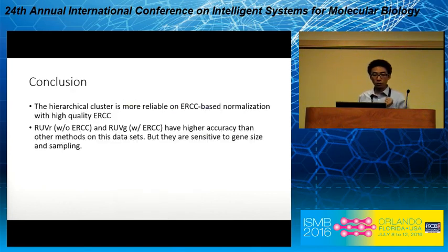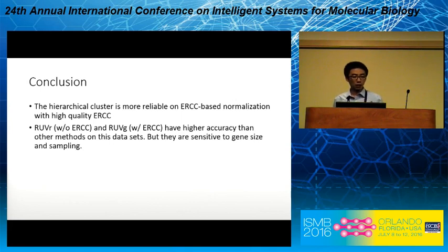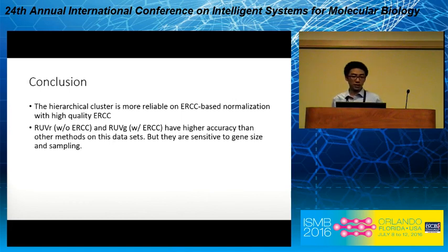So we have these conclusions. First, hierarchical clustering is more reliable with ERCC-based normalizations. Second, ROVR and ROVG have higher accuracy than other methods, but are sensitive to gene sets and sampling.